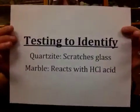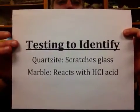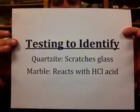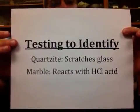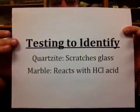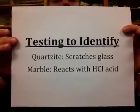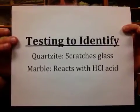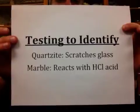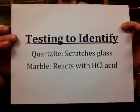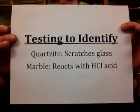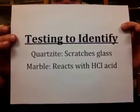Quartzite and marble can look extremely similar in appearance, so how can we distinguish between them? The great thing is quartzite contains quartz, which has a distinguishing characteristic compared to marble's calcite and dolomite: it is hard enough to scratch glass. Marble containing calcite and dolomite will react with hydrochloric acid, which quartz will not do.